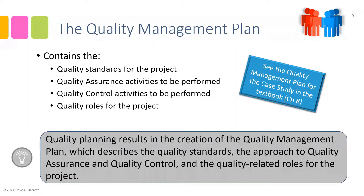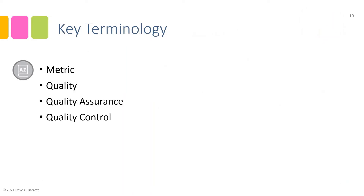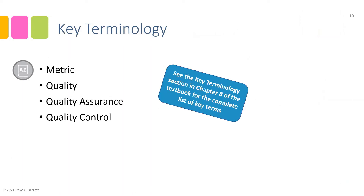Overall, the key idea is that quality planning results in the creation of the quality management plan, which describes the quality standards, the approach to quality assurance and quality control, and the quality-related roles for the project. Key new terminology from this video includes: metric, quality, quality assurance, and quality control. See the key terminology section in Chapter Eight for a complete list of terms and definitions. That wraps up our discussion of quality planning for this video lecture.